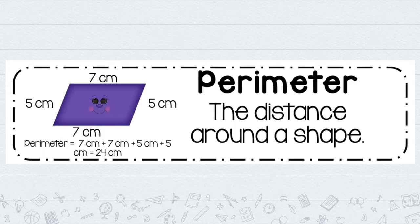One side is seven centimeters, another is five, another is five, and another is seven. So I have all the measurements there. If I have to find the perimeter, if I have to find the distance — the measurement around this entire shape — I would have to add all those numbers. So perimeter goes with addition. That's the operation that I use to find the perimeter of shapes, and I have to add all the sides.